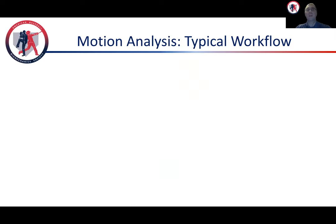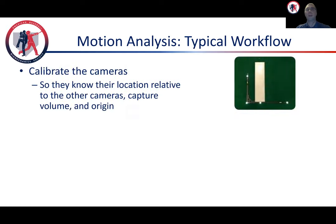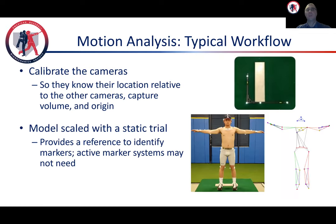Here is a look at a typical evaluation workflow. Prior to an athlete arriving, you should calibrate the cameras so that they know their location relative to the origin, capture volume, and other cameras. After the athlete is markered up, you record a static trial that is used to scale or calibrate a stick figure model that defines different body segments.